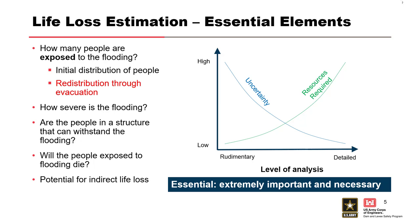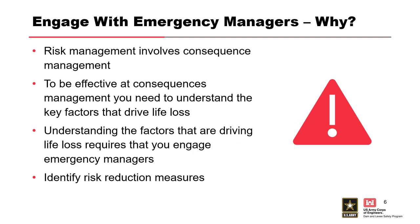Engaging with emergency management. Risk management involves consequences management — there are really two ways to reduce risk. One, you can change how likely an area is to get wet, whether it's building a levee, widening a channel, or whatever it might be — you can reduce the likelihood that water gets to a certain area. The other side is you can take action that reduces the consequences of water getting to that area. Those are the two primary things we can do to reduce risk from flooding.